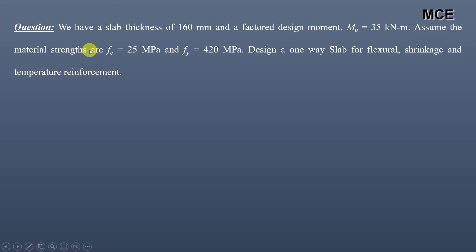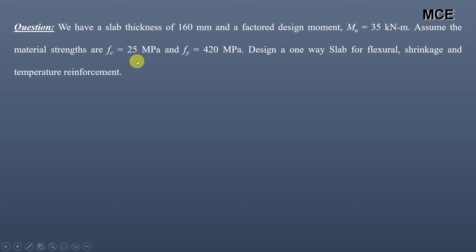The given problem states that we have a slab thickness of 160 mm and a factored design moment of 35 kNm. The material strengths are: grade of concrete fc' = 25 MPa and yield strength of steel fy = 420 MPa. We have to design a one-way slab for flexural, shrinkage, and temperature reinforcement.